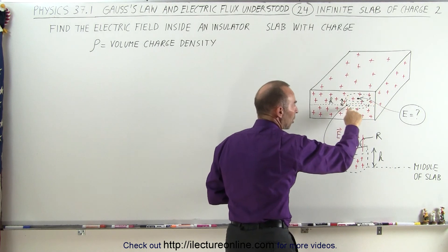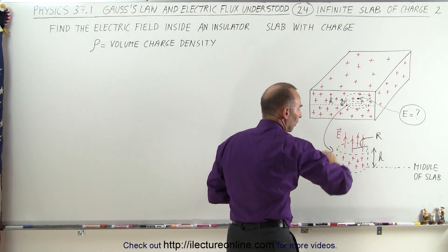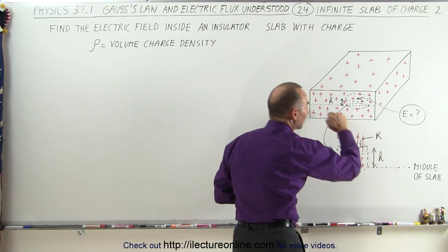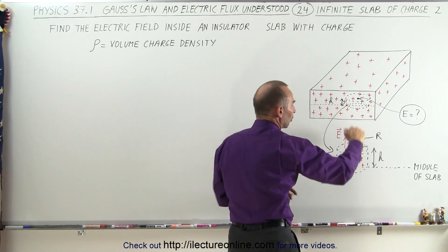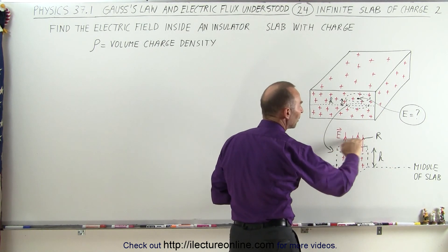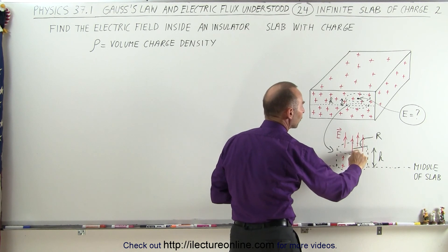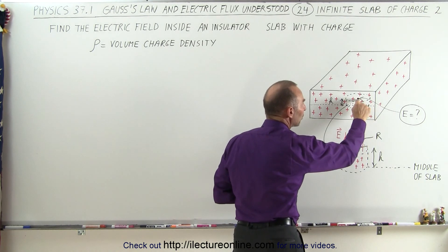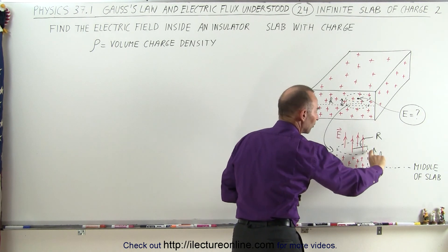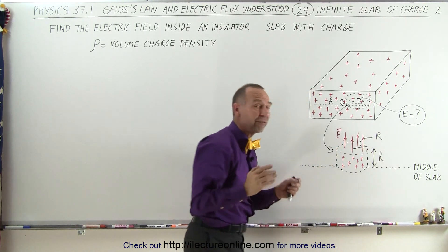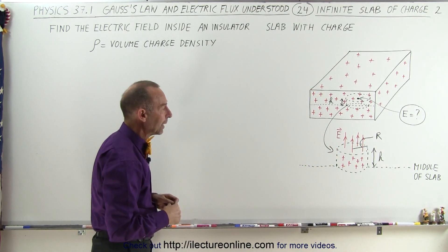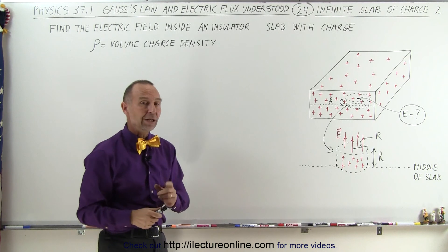If we make a small Gaussian surface like that, the bottom of the Gaussian surface is going to be even with the middle of the slab so there's no electric field emanating that way, and the top of the Gaussian surface is even with the point of interest — distance h above the center of the slab — where we want to find the strength or the magnitude of the electric field.